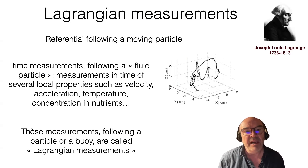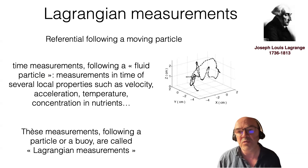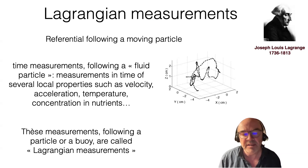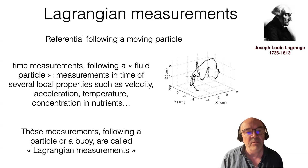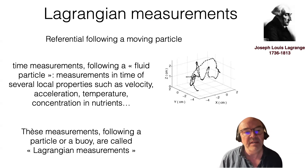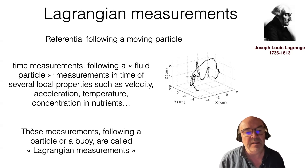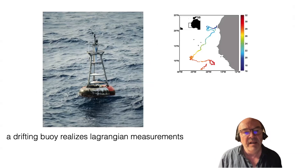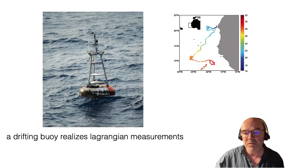On the other hand, you can also have Lagrangian measurements. Lagrangian comes from Joseph Louis Lagrange, a French mathematician. In this case, the referential follows a particle moving with the system. We have time measurements and can measure different local properties like velocity, acceleration, temperature, and nutrient concentration. These are called Lagrangian measurements. One example is a drifting buoy that is instrumented to measure local properties while drifting with the water masses.